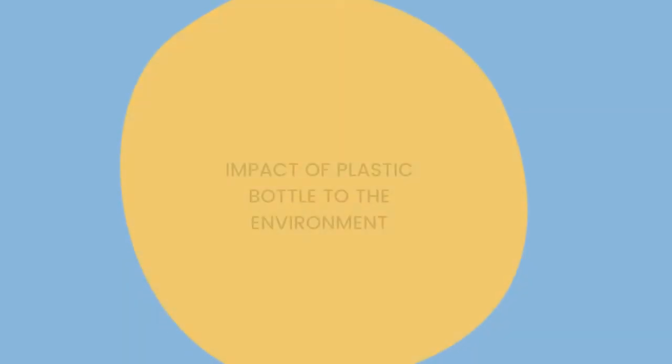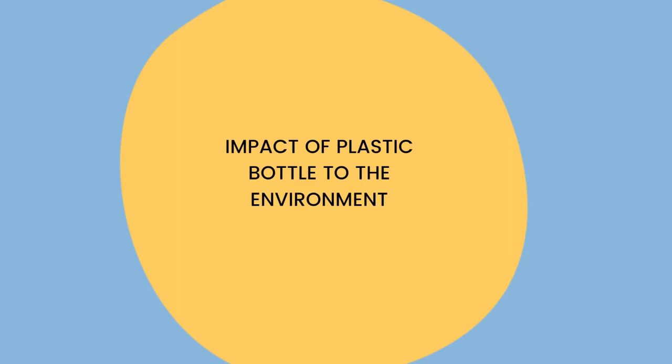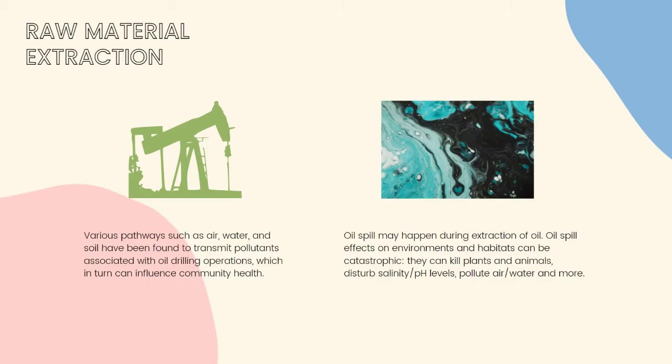For the next section, we will talk about the impacts of plastic bottles. During raw material extraction, various pathways such as air, water, and soil have been found to transmit pollutants associated with oil drilling operations, which in turn can influence community health. Oil spills may happen during extraction of oil. Oil spill effects on environments and habitats can be catastrophic — they can kill plants and animals, disturb salinity and pH levels, and pollute air and water.